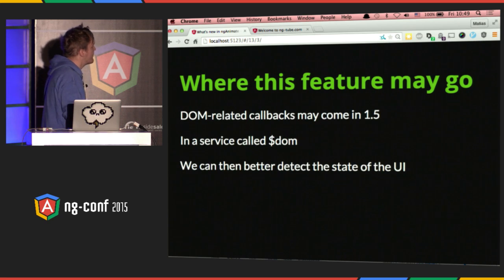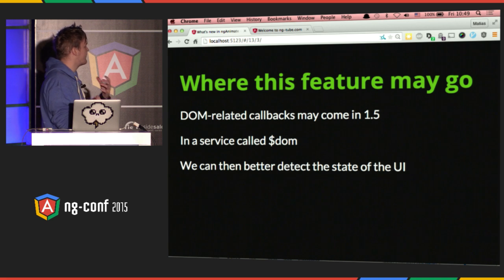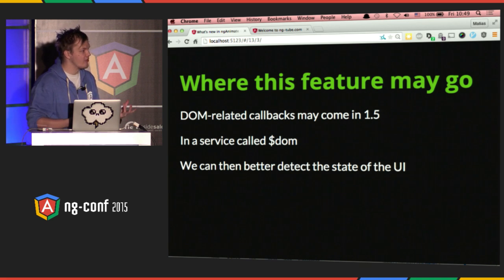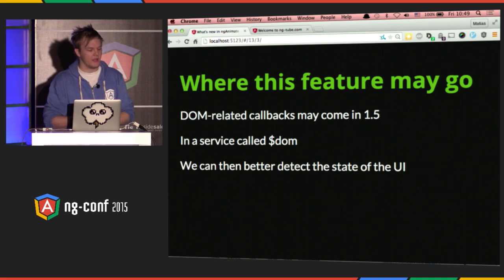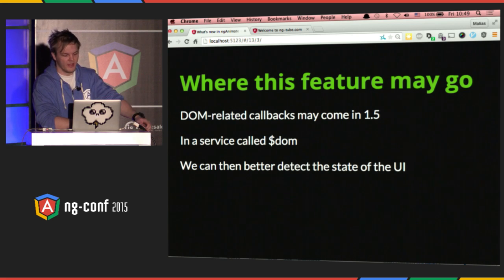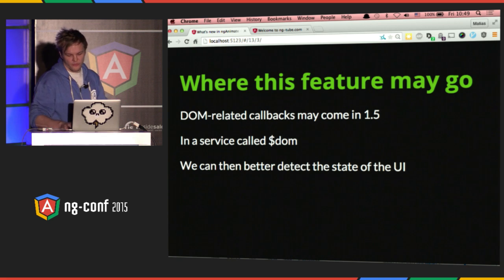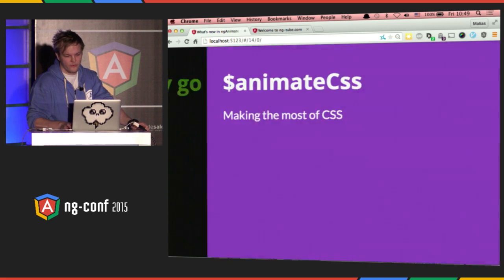This is a small fix, but it might lead to better things in 1.5 or down the road. We might even be able to have a system where we can detect if all UI changes are done. This is a much-requested feature in Angular — to know, for example, how do I detect if all my repeat elements are done. It's not guaranteed, but it's an idea that we're trying to see where it goes.